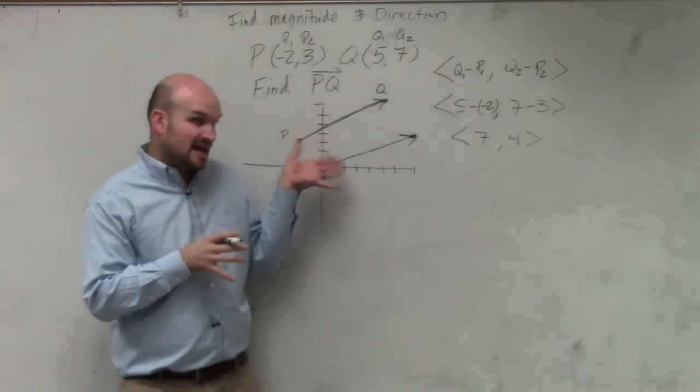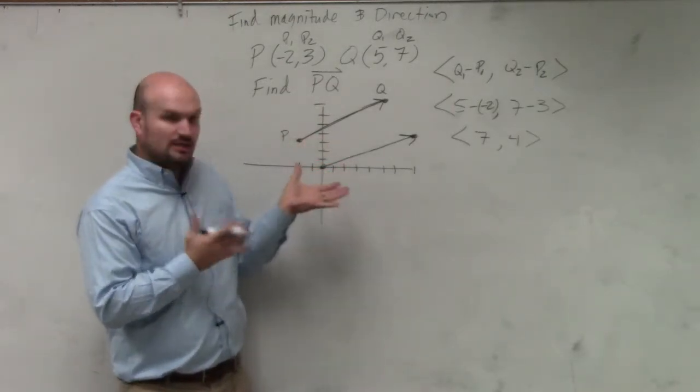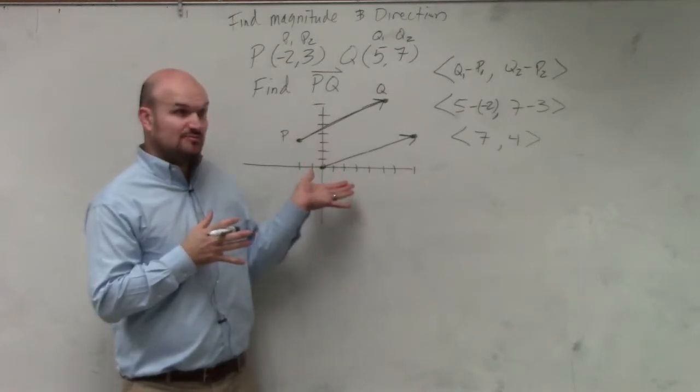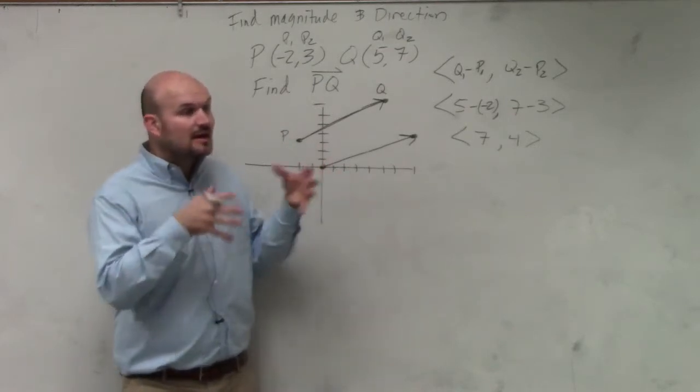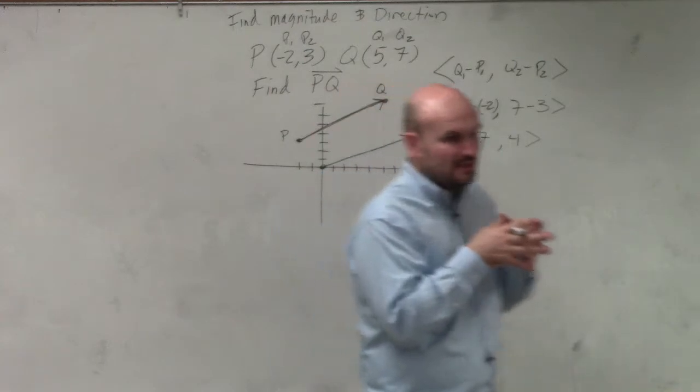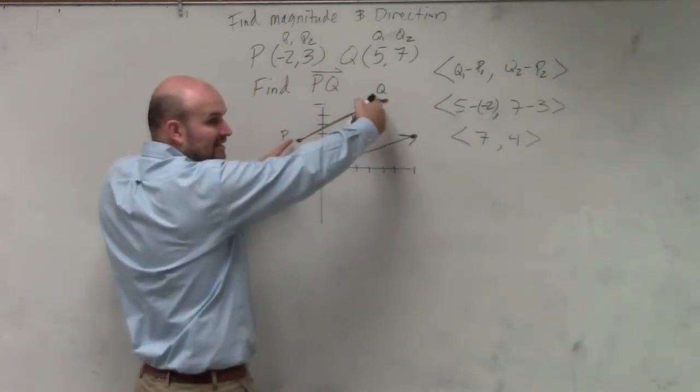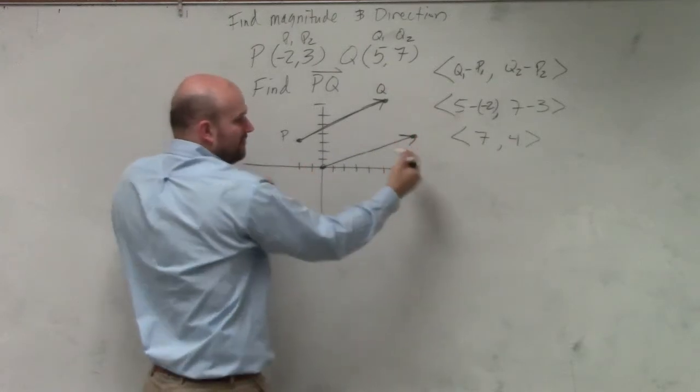Now, do these two vectors that I just drew look like they have the same magnitude, length? Yeah. Do they look like they have the same direction? Yes. But what's important, what I did, was I took this vector that had an initial point and terminal point and I rewrote it in component form.